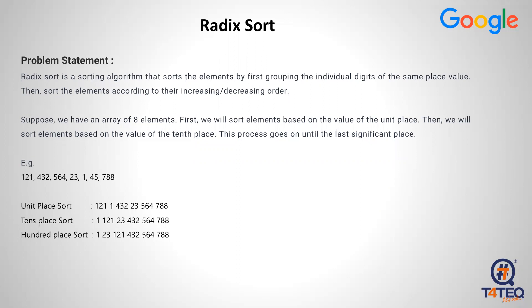So, if you want to sort a set of numbers, first sort by the unit digit, then the tens place, then the hundreds place. This is how the algorithm works. How do you program this?